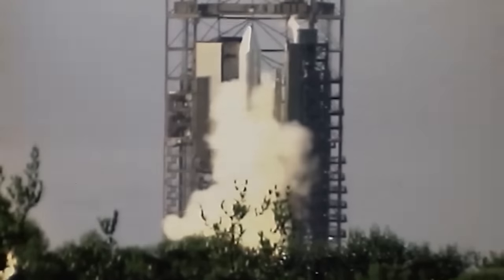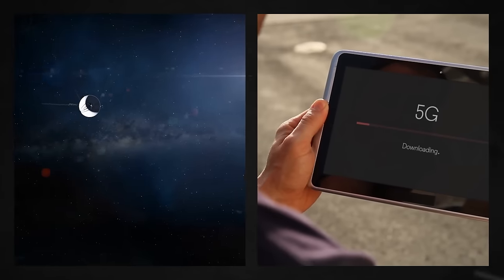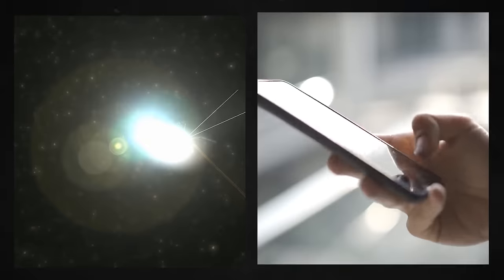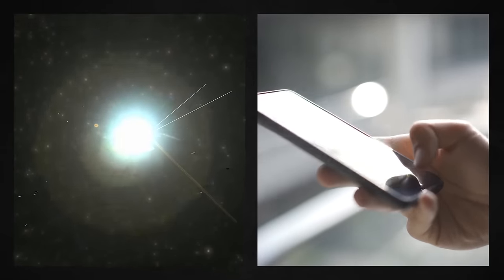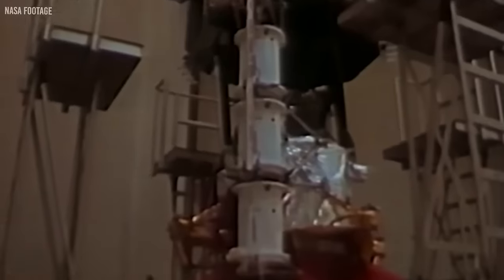The Voyager twins serve as living monuments to their time in many respects. Their data transmission speeds are around 40,000 times slower than 5G internet, they both have 3 million times less memory than modern cell phones, and they both have an 8-track tape player for data recording.